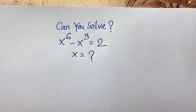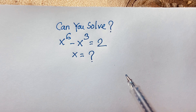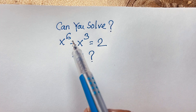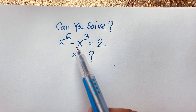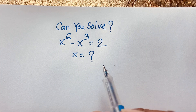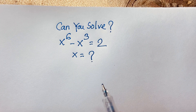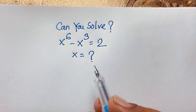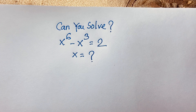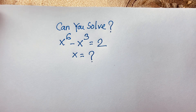Hello everyone. In this video we'll solve a nice German Math Olympiad question which is x to the power 6 minus x to the power 3 is equal to 2. We'll find out what is the value of x in this exponential equation.